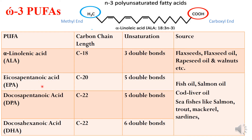Eicosapentaenoic acid is the next example, which has a 20-carbon chain length and five double bonds. Docosapentaenoic acid is the next example, which also has a 20-carbon chain length and five double bonds. Whereas docosahexaenoic acid has a carbon chain length of 22 and six double bonds.